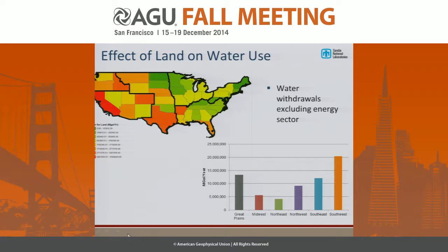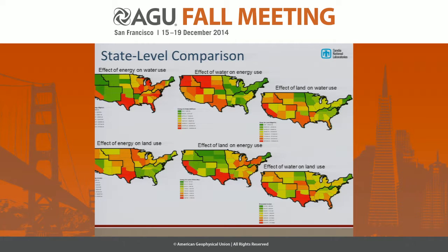Finally, the choices about land and how that affects water use. Here we're looking at all different kinds of water use — withdrawals in million gallons per year — for everything except energy, so largely for irrigation, industrial, municipal, and domestic use. You can see a pretty strong regional pattern with higher use tending to be in the west where a lot of our irrigation is occurring.